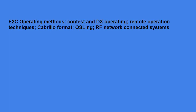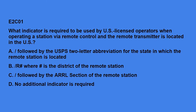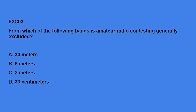E2C covers operating methods: contest and DX operating, remote operation techniques, Cabrillo format, QSLing, and RF network connected systems. E2C01: What indicator is required to be used by US-licensed operators when operating a station via remote control and the remote transmitter is located in the US? No additional indicator is required. E2C03: Which of the following bands is amateur radio contesting generally excluded from? The answer is 30 meters — no contesting on 30 meters, typically.